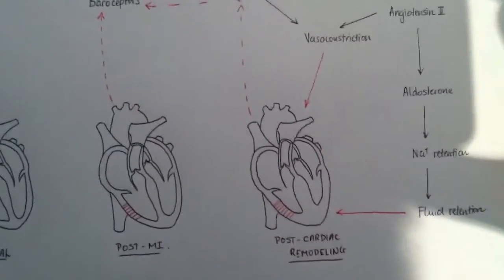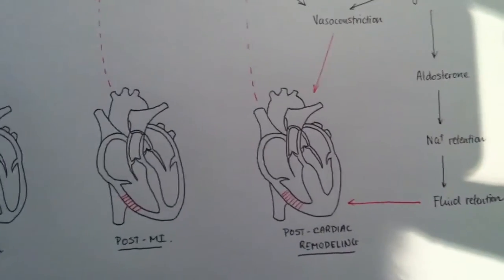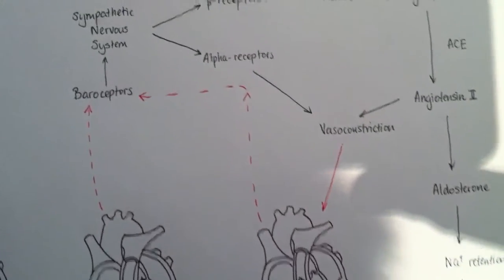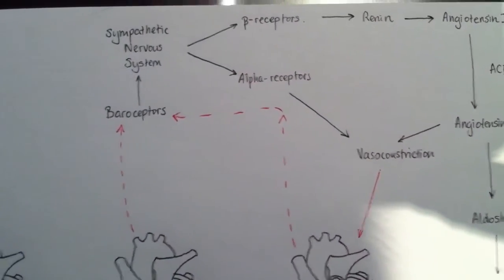When cardiac output isn't maintained, this whole cycle is then starts again, and baroreceptors is then triggered, and so on and so forth.